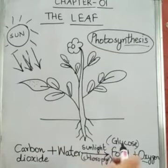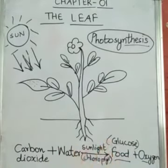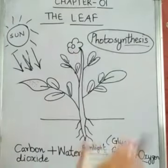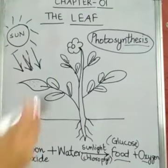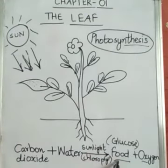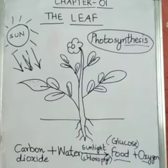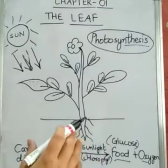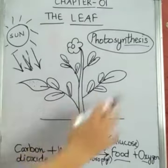Oxygen gas is produced in the leaves during photosynthesis, and this oxygen goes into the air. The simplest food prepared by the leaves is glucose. Some of the glucose is converted into starch, and this starch is stored as food in various parts of the plant.